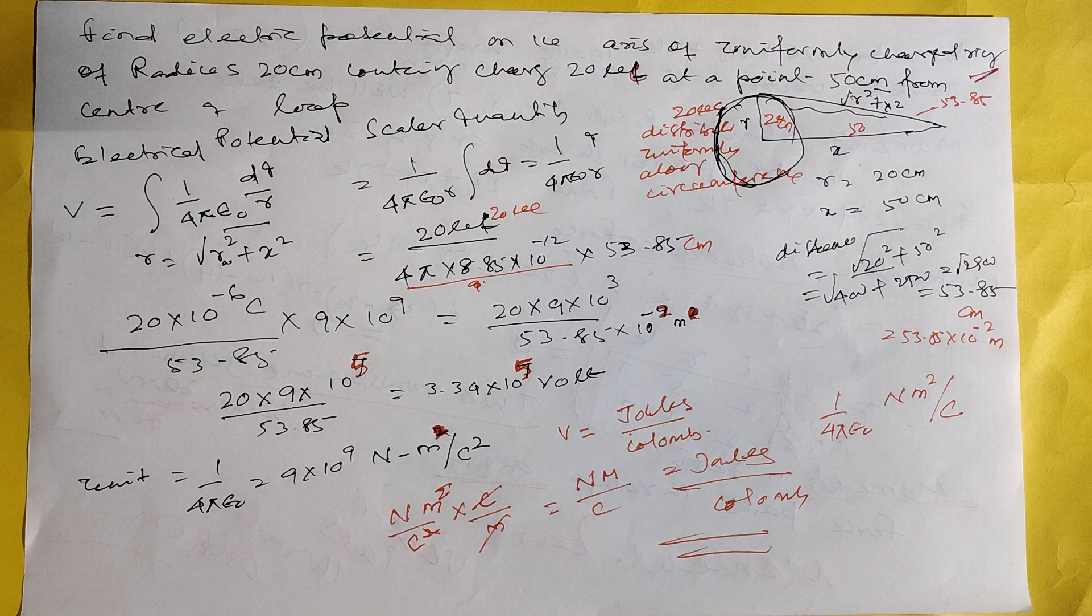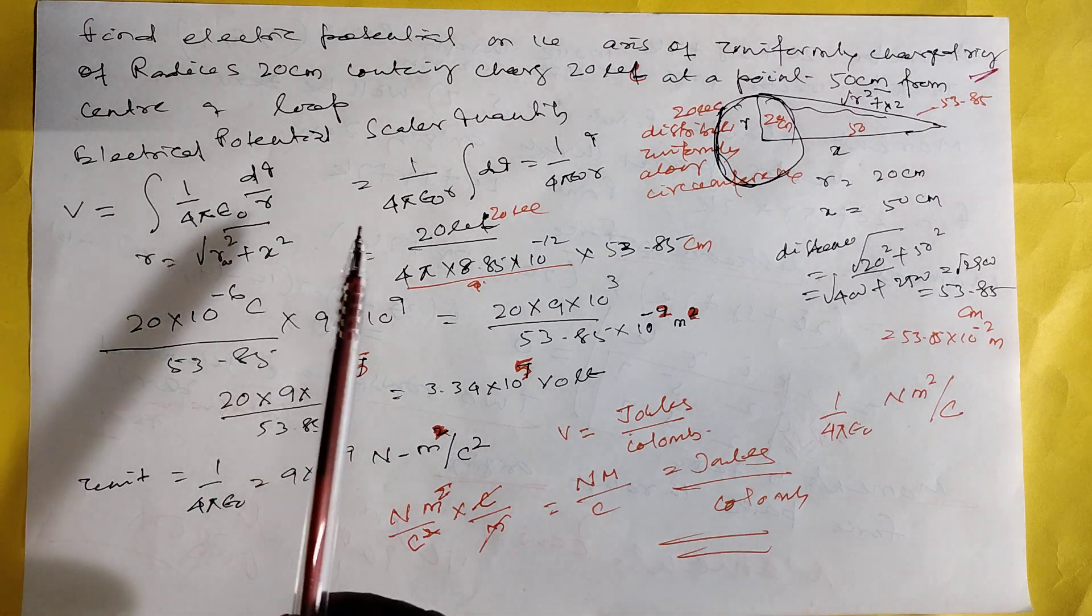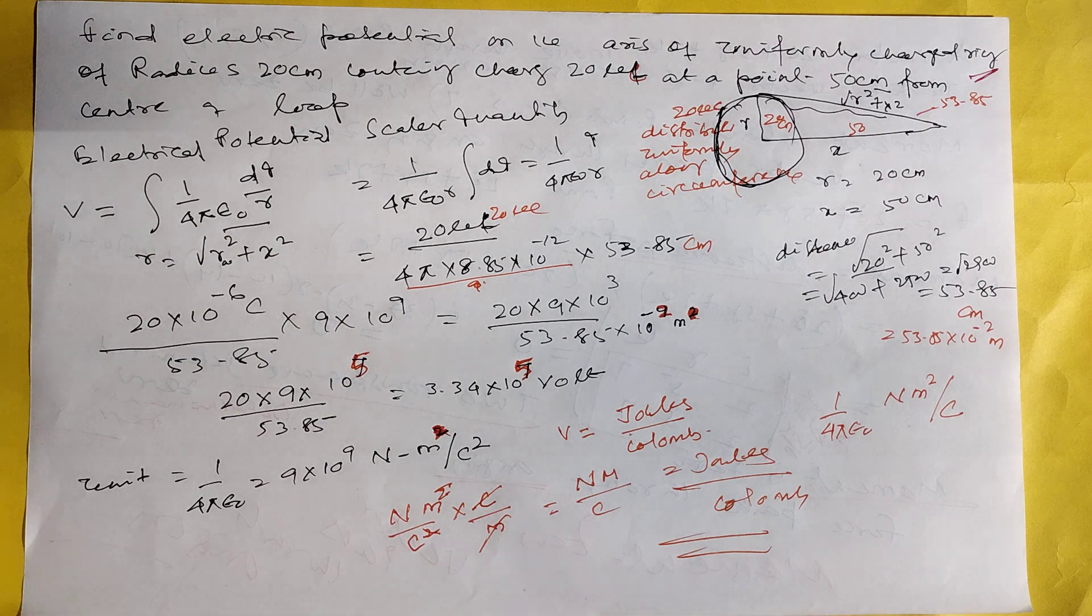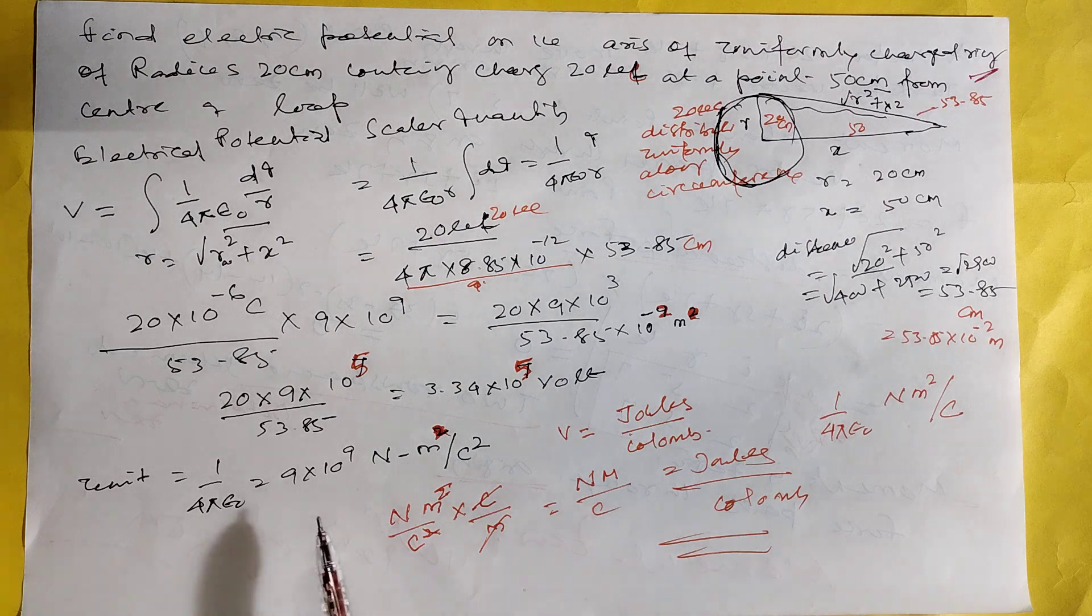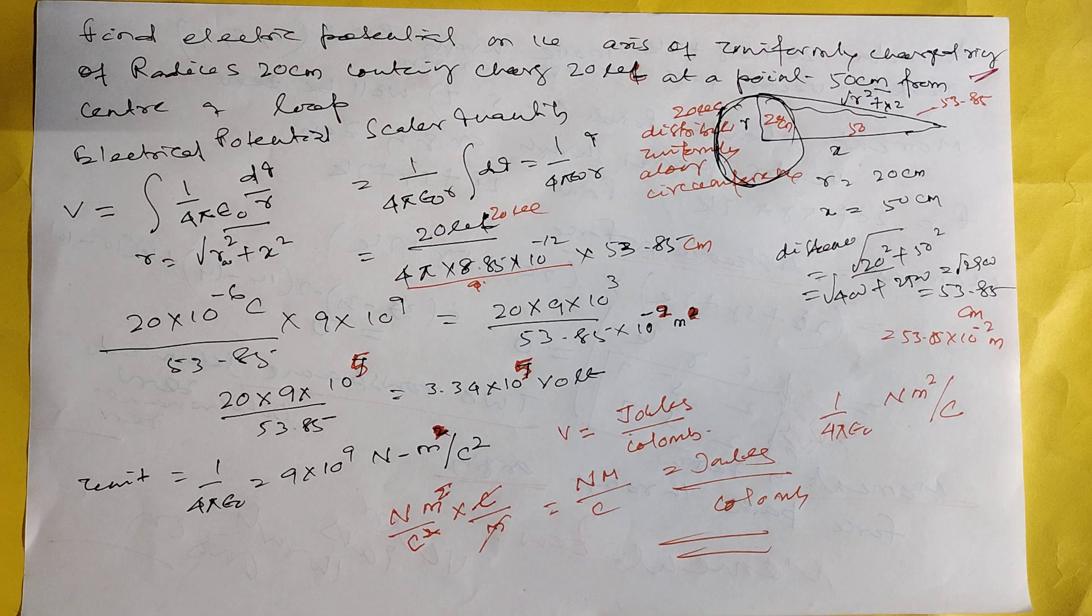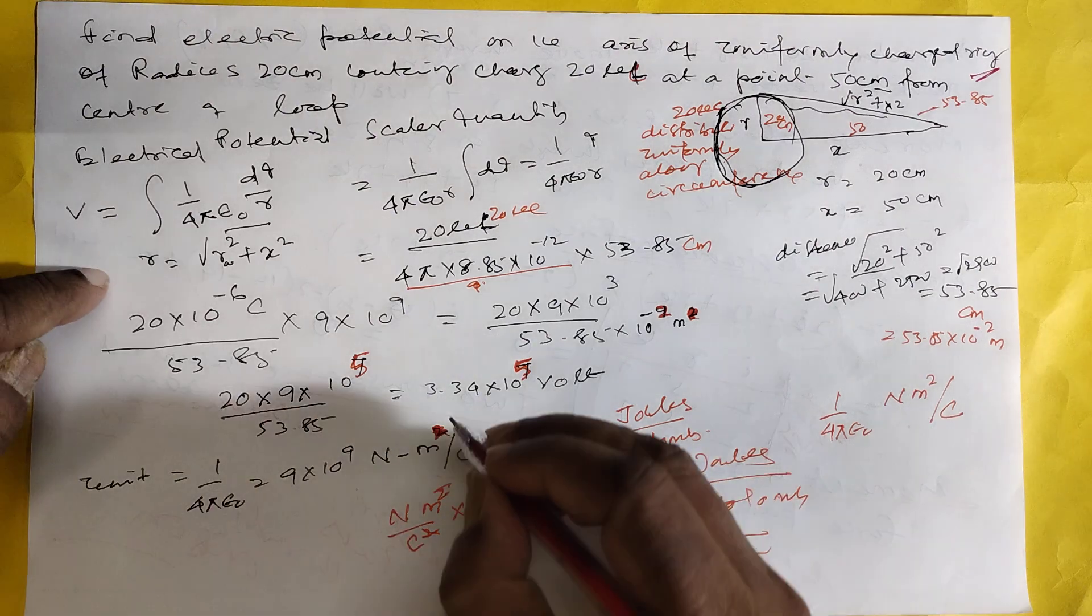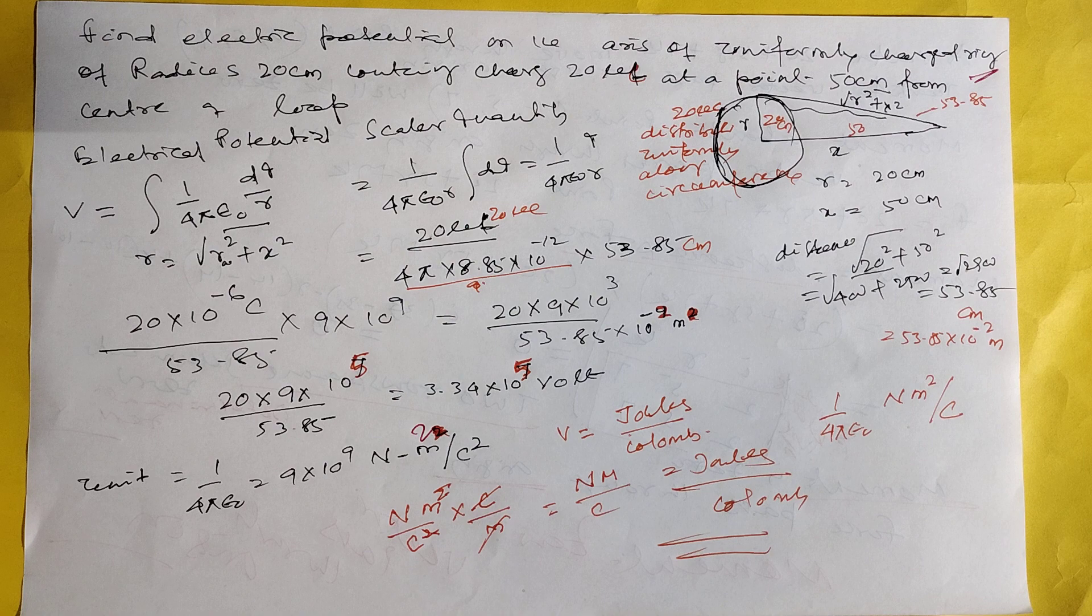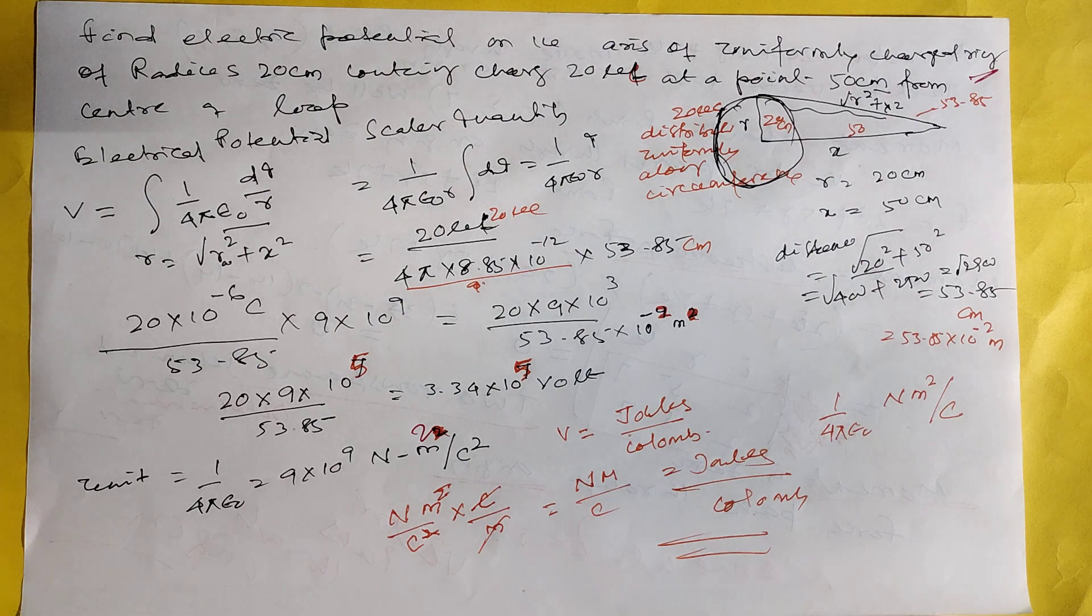1 by 4 pi epsilon 0 is equal to 9. There is a deliberate confusion. Because what is this? Here 1 by 4 pi epsilon 0 is equal to 9 into 10 to the power 9. Newton meter square, Newton meter square divided by coulomb square.